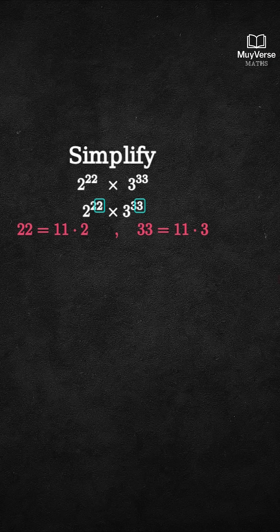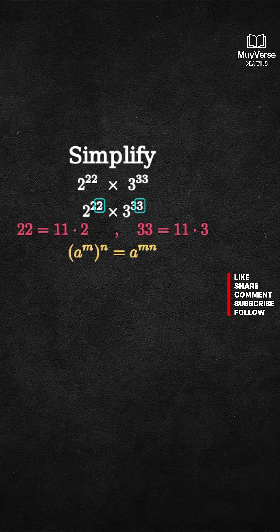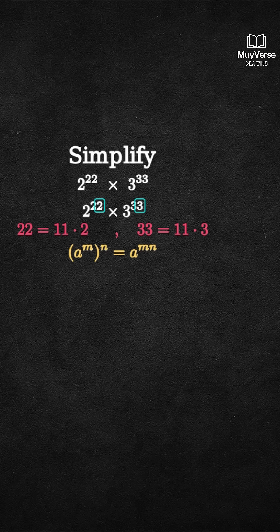Step 3. Rewrite each as a power of a power using the rule, (a^m)^n = a^mn. 2^22 becomes (2^2)^11, and 3^33 becomes (3^3)^11.